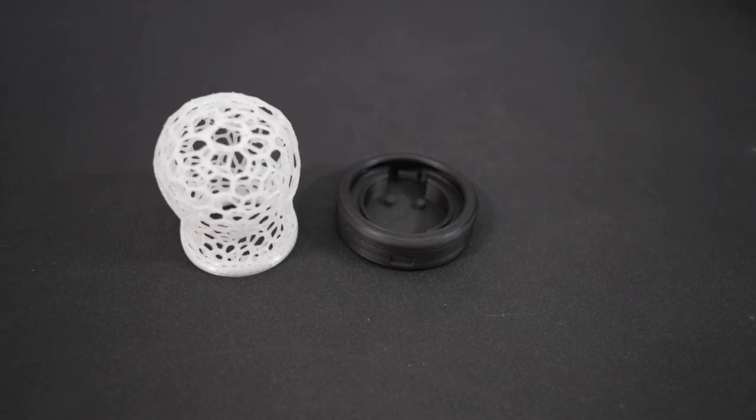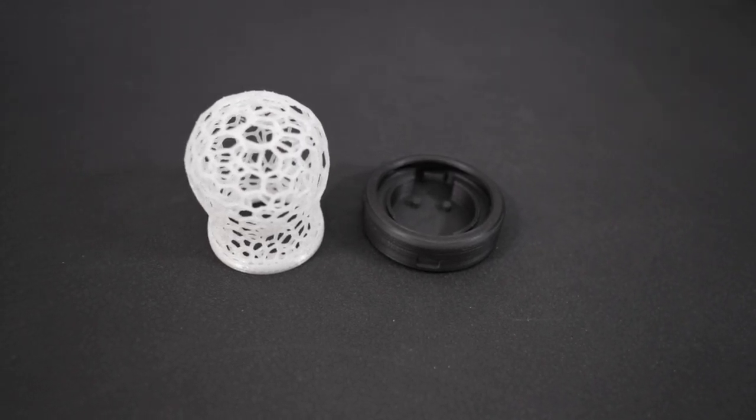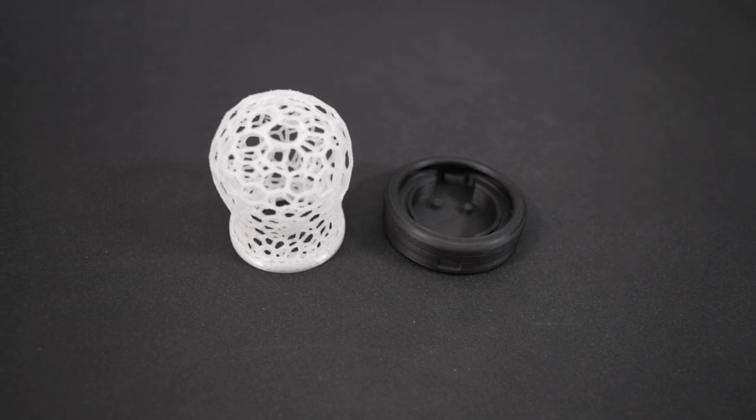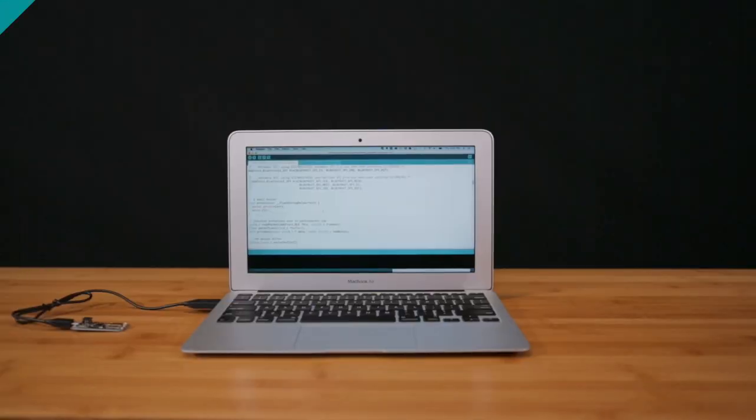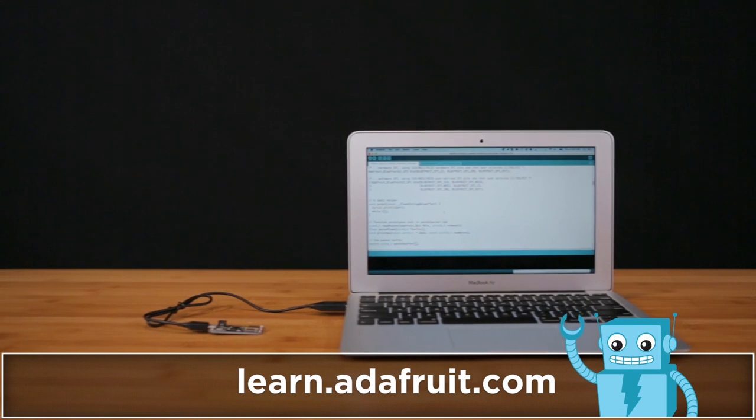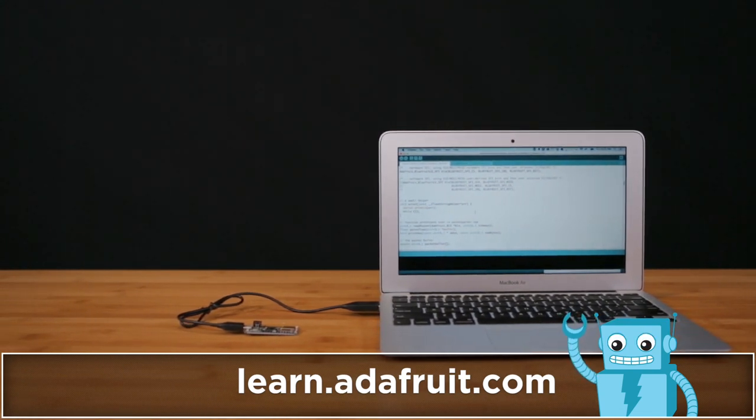The enclosure is 3D printed and available to download and modify. If you don't have access to one you can send the files to a service like 3dhubs.com. You can get the Arduino libraries and sketch for this project by checking out the guide on the Adafruit learning system.